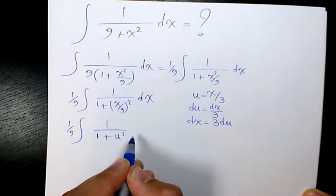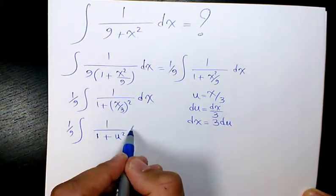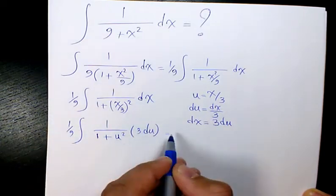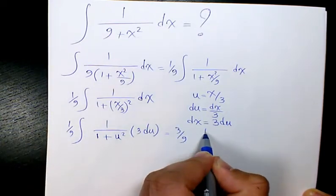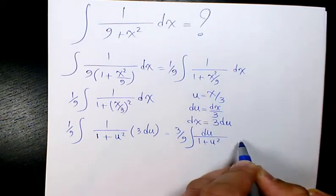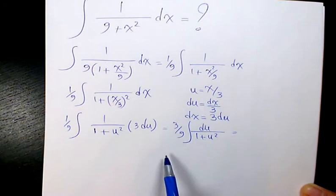Then I move 3 over, so it's going to be 3/9 times the integral of du/(1 + u²). As you see, we have the integral of du/(1 + u²).